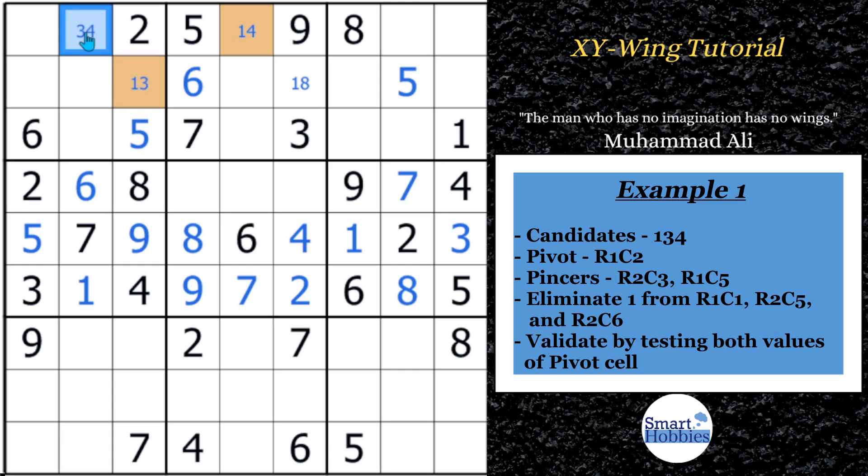Here's how it works. Basically, what you can do is you look and see which common candidate are in the two pinchers. In this case, they both contain a 1. When you see that, you can eliminate a 1 from any cell that sees both of these orange cells. The way you want to validate this is you want to go to the pivot and put in both possibilities for it. So, if this cell was a 3, this cell would have to be a 1. And if this cell is a 4, this cell would have to be a 1. And so, either way, one of these orange cells has to be a 1. That's why you can eliminate a 1 from any cell that sees both of these. And that's the nice part about it because it's very easy to validate an XY wing. So, in this case, you know one of these cells has to contain a 1. So, we can eliminate a 1 from right here and solve this cell for an 8.